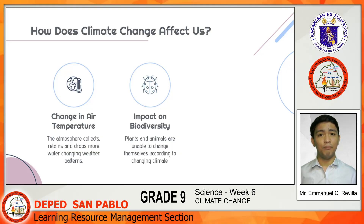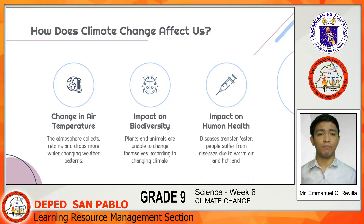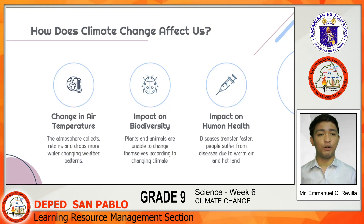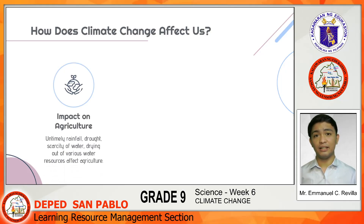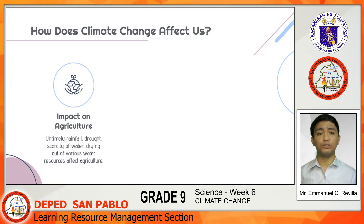Impact on biodiversity — because of climate change, many plants and animals are unable to adapt quickly, resulting in their population decreasing and nearing extinction. Impact on human health — because of the increase in average global temperature, diseases transfer faster, and more people suffer from diseases due to warm air and hot land, like heatstrokes, cardiovascular, and kidney diseases. Impact on agriculture — changes in climate result in untimely rainfall, drought, scarcity of water, and drying out of various water sources, which affects food security.